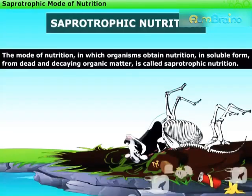The mode of nutrition in which organisms obtain nutrition in soluble form from dead and decaying organic matter is called saprotrophic nutrition.